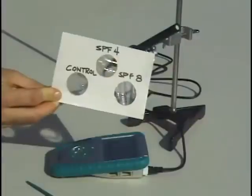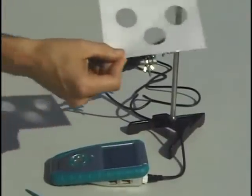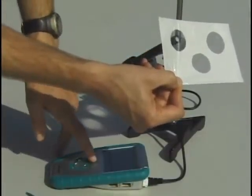Now we get our card ready with all the different UV values, and we need to make sure that we keep the sunscreen on the side away from the sensor so that we don't get any of the oils on the tip of the sensor.